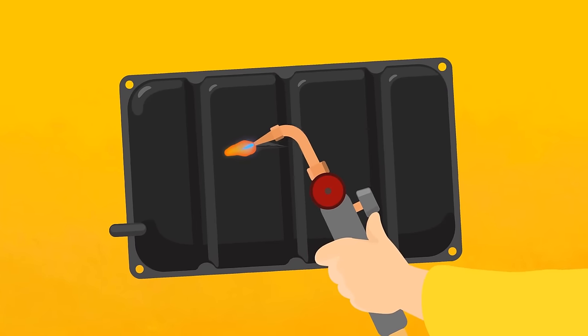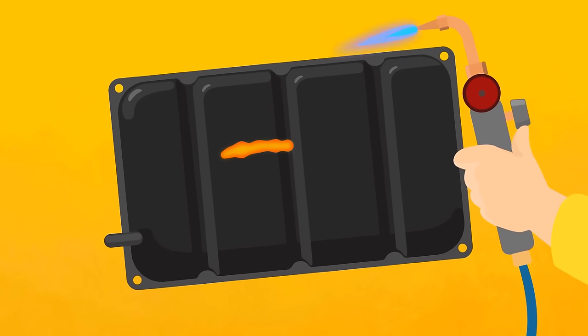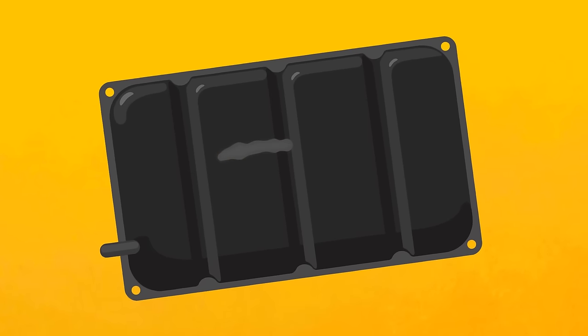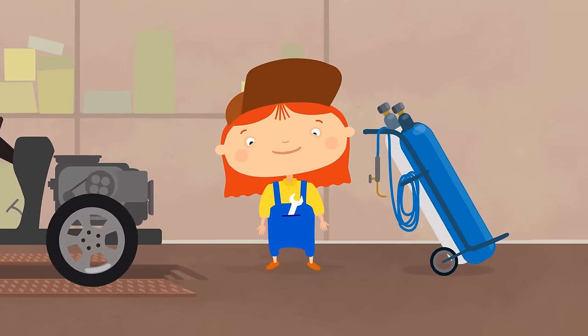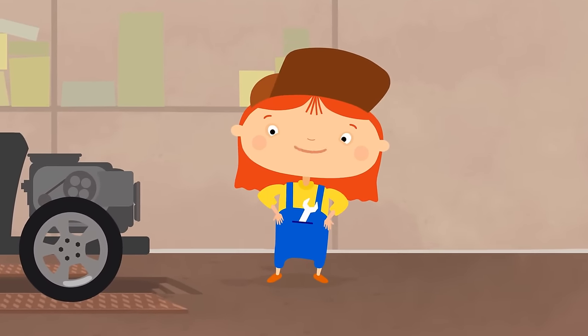The metal got hot and turned red. And then it cooled down and became gray again. And the crack disappeared. Everything is ready. We can reassemble the car.